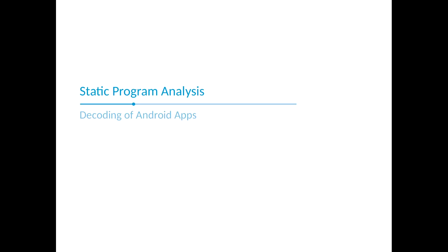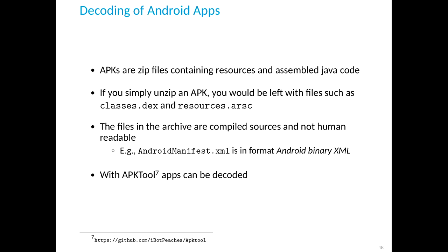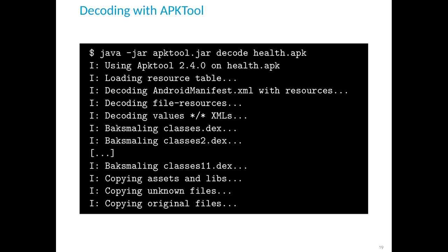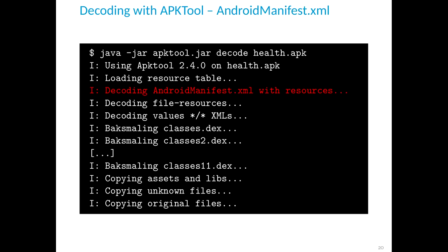After extracting the Huawei Health app, I wanted to decode it. APKs are zip files containing resources and assembled Java code. If you simply unzip an APK you get binary files — for example, the AndroidManifest.xml is in Android Binary XML format, which is not human readable. There is a tool called APKtool which can properly decode apps. For me, the AndroidManifest was very interesting from a security perspective.